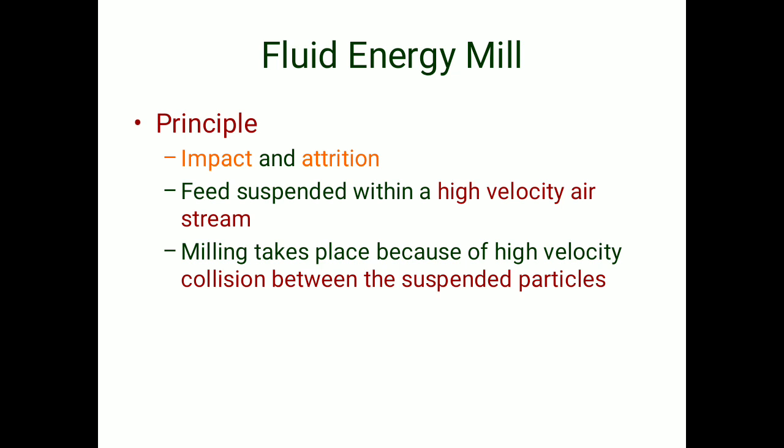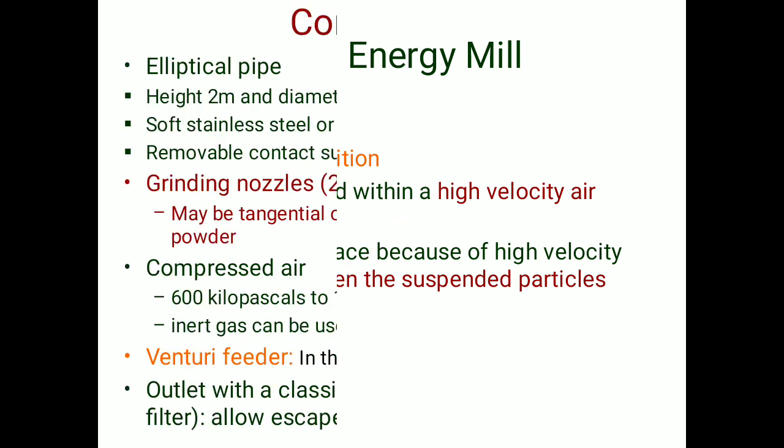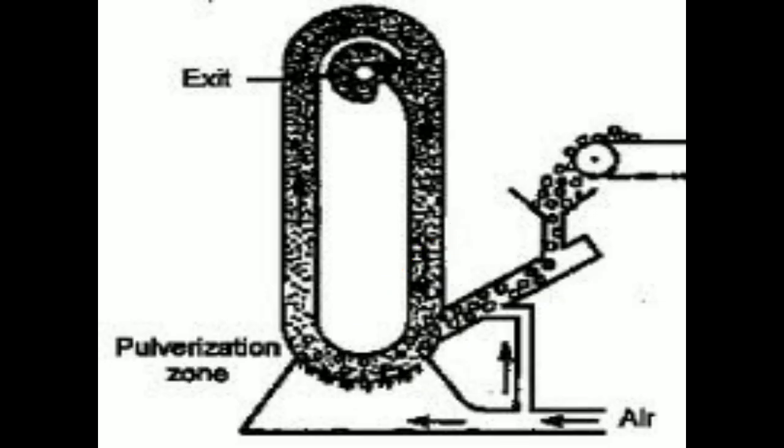Let's begin with fluid energy mill. Similar to ball mill, fluid energy mill is based on a combination of both impact and attrition. The feed is suspended within a high-velocity air stream, and size reduction takes place because of high-velocity collision between the suspended particles. If we see the diagram, there is a cylindrical tube pulverization zone, and this is the actual fluid energy mill.